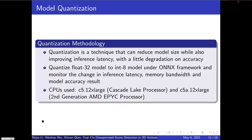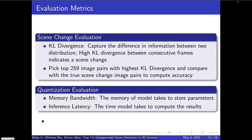Next, we move on to model quantization. We quantize our models on two different CPUs, and the results will be shown in the following slides. In terms of evaluation metrics, we use scene detection accuracy as the scene change evaluation metric, and memory bandwidth and inference latency as quantization evaluation metrics.